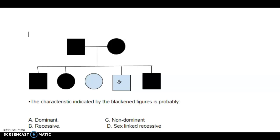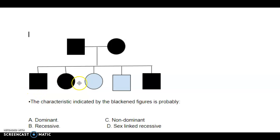If it were sex-linked recessive, then for mom to show it she would have to have two X's with that recessive trait, and dad's only X would also be recessive. That means this son would have dad's X, so if dad had an X for that trait, this son would have that trait also. But he doesn't, so we know it's not sex-linked recessive.